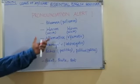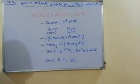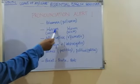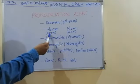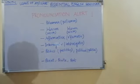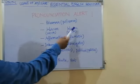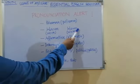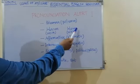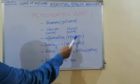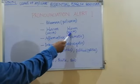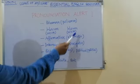Another word: W-A-R-M. The correct pronunciation is 'worm'. And the word W-O-R-M is also pronounced 'worm'. So 'warm' is pronounced 'worm' and 'worm' is also 'worm'.